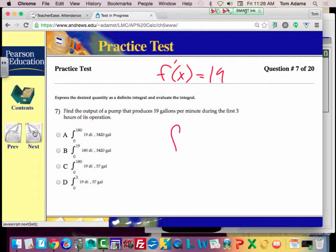So really what we're doing is we're going to integrate 19 dt. Since they say per minute, we're going to go from zero. It's three hours, but how many minutes are in three hours? 180.